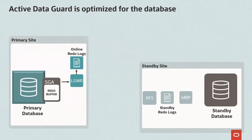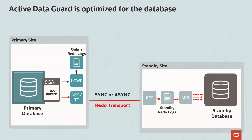Oracle Active Data Guard is a data replication solution for Oracle databases. Active Data Guard transmits data either synchronously or asynchronously directly from the SGA, that is directly from memory. On the receiving side, data is not only received but also applied by an actively running Oracle instance. Data replication occurs at the database level, with the primary database continuously replicating only redo transactions to the standby database, and not the entire blocks.